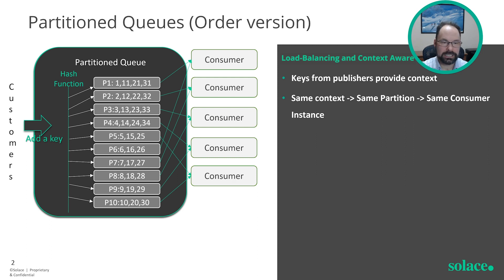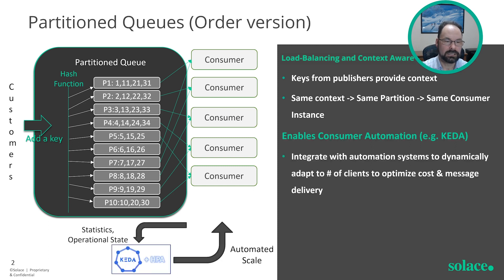Now, let's say Black Friday is approaching. You want to plan for temporary but unprecedented peak demand. We suggest adding autoscaling, like CNCF's open-source Kubernetes event-driven autoscaling, or KEDA, to monitor demand and spin up and down consumers based on that demand.